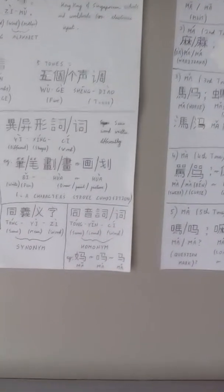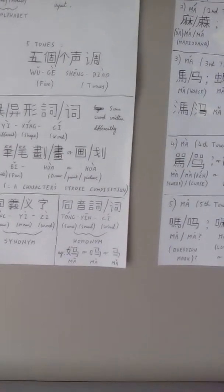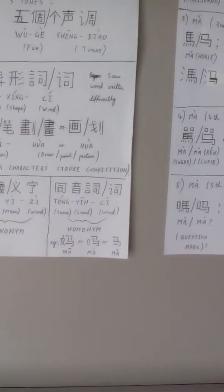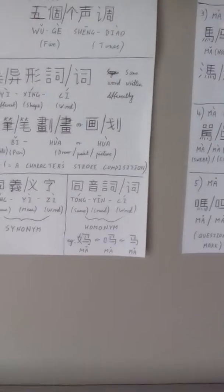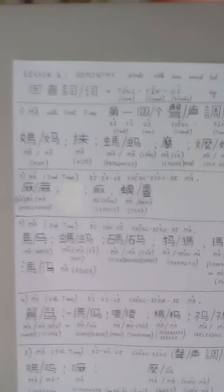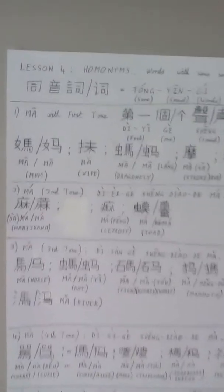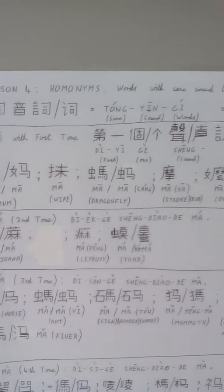Welcome to Lesson 4. In Lesson 3, I finished off by talking about homonyms, 同音词. And I said for the word 马, there's about at least 20 homonyms. So I want to go through some of those homonyms, 同音词, same sounding words for the word 马.